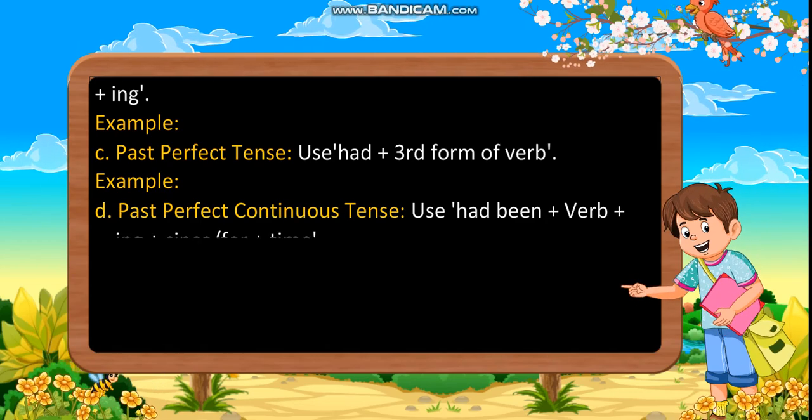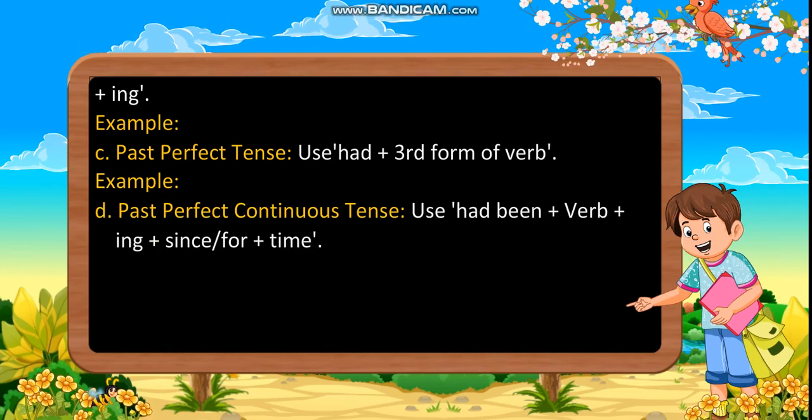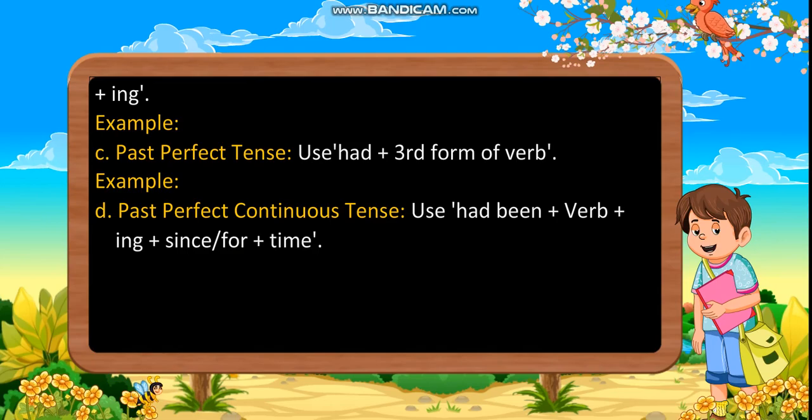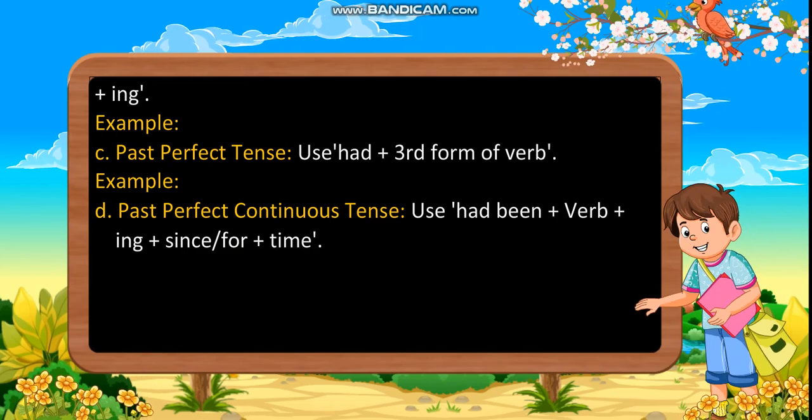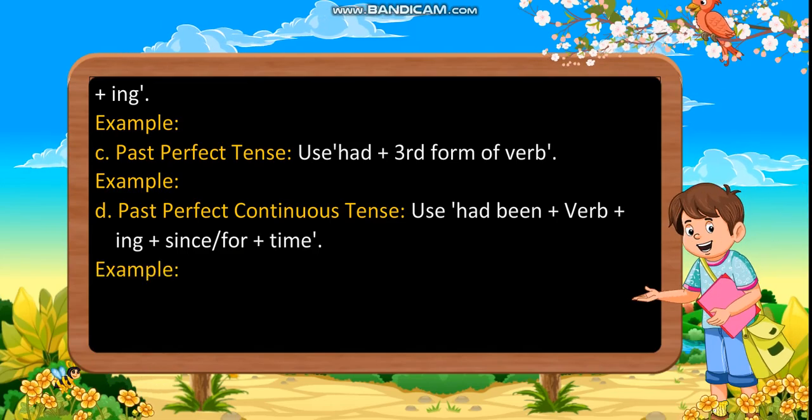Past perfect continuous tense: Use had been plus the first form of verb plus I, N, G, plus since or for plus time. Example: He had been sleeping for two hours.